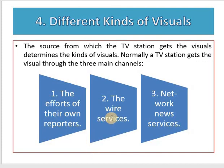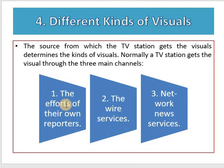The sources from which a television station gets its visuals determine the kinds of visuals used. Normally a television station gets visuals through three main channels: first, the efforts of on-site reporters; second, wire services; and third, the network news service.